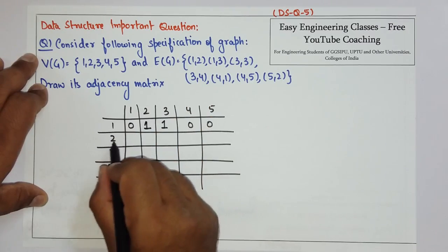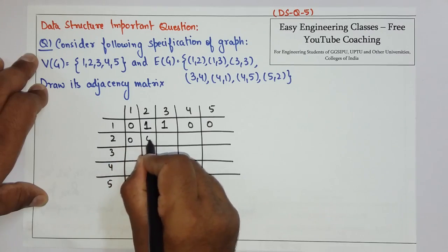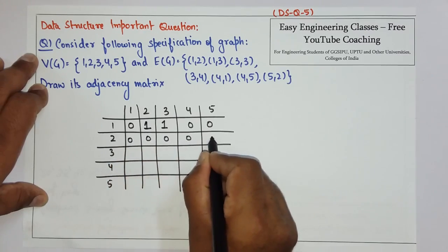Similarly look for 2. There is no edge from 2. So put 0 in all the cells.